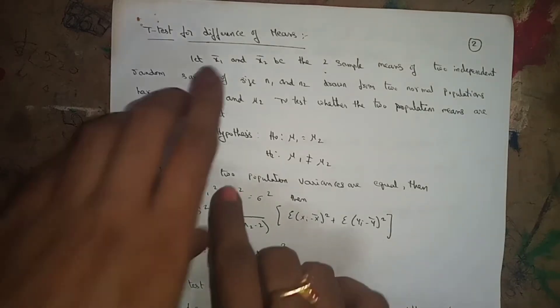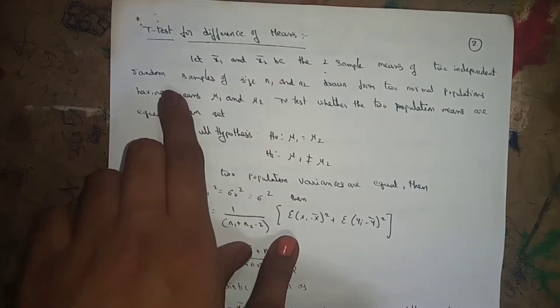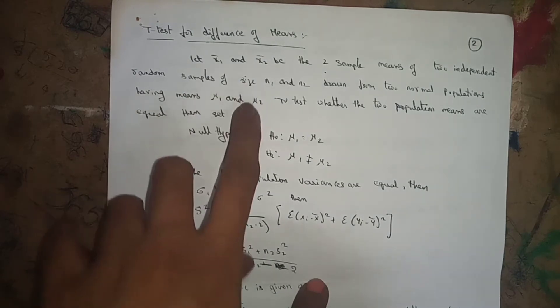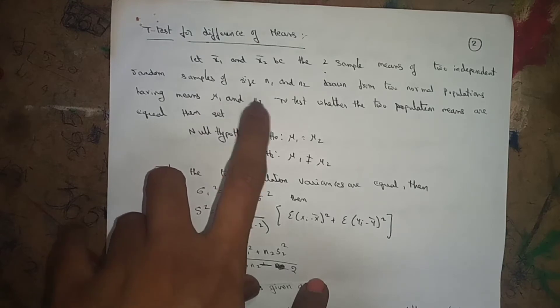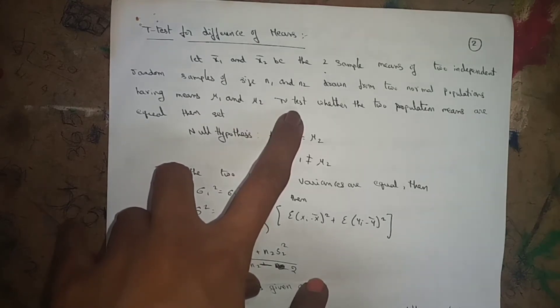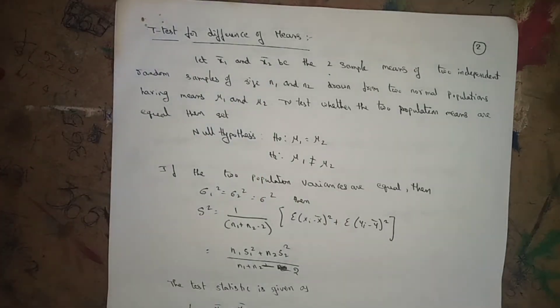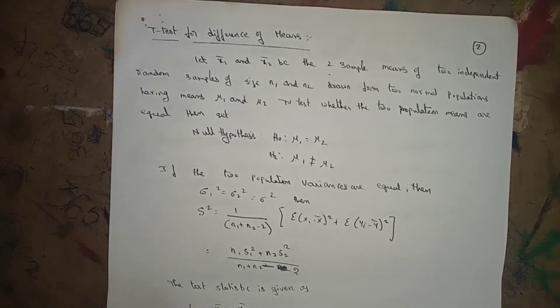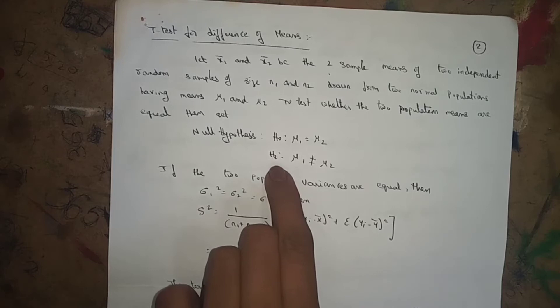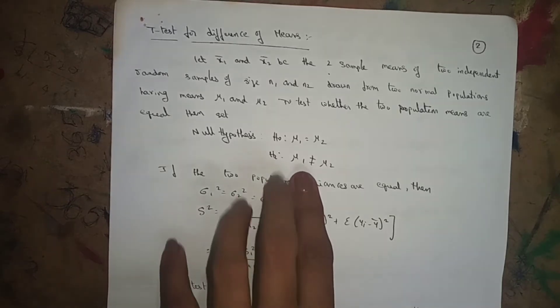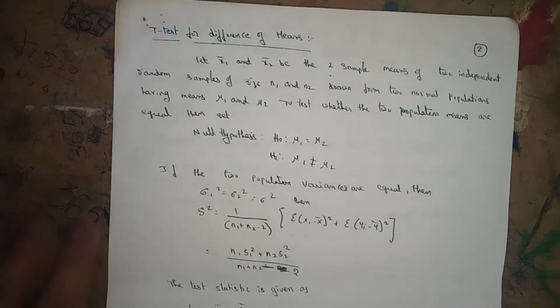Let x1 bar and x2 bar be two sample means of two independent random samples of size n1 and n2, drawn from two normal populations having means mu1 and mu2. To test whether the two population means are equal, we set the null hypothesis H0: mu1 = mu2, and alternative hypothesis H1: mu1 ≠ mu2.